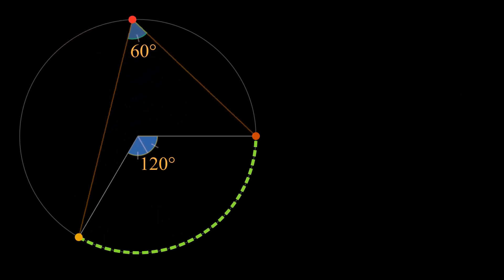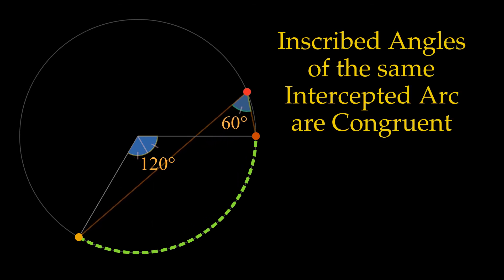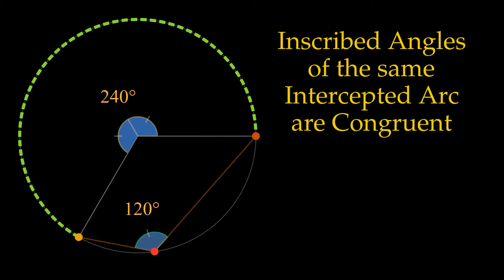Inscribed angles of the same intercepted arc are congruent. The angle is the same as long as it's the same intercepted arc.